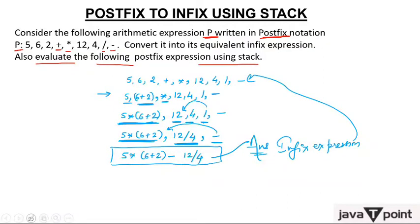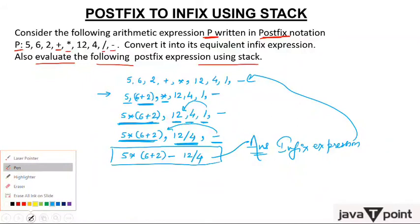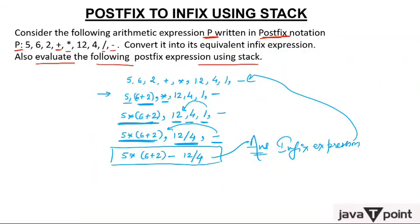Let's verify by solving directly. 6 + 2 = 8. Then 5 × 8 = 40. And 12 / 4 = 3. So 40 − 3 = 37. The answer of the above postfix expression is 37. But your job is not to solve directly — your job is to solve using stack.